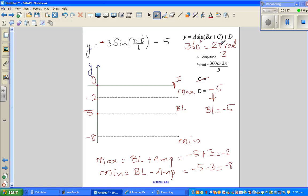The next important thing is you have to decide the period. The variable is t here. The coefficient is pi by 6. So it's pi by 6.